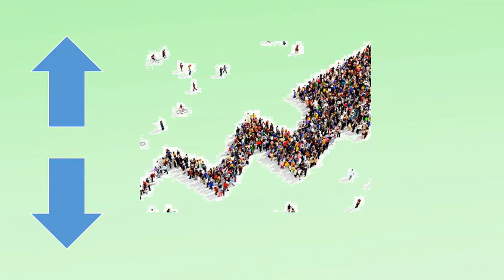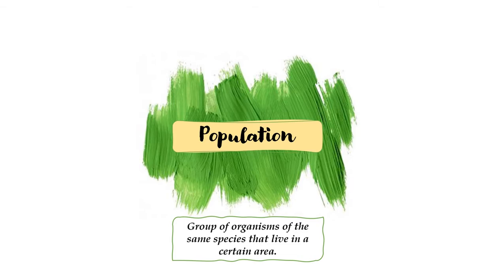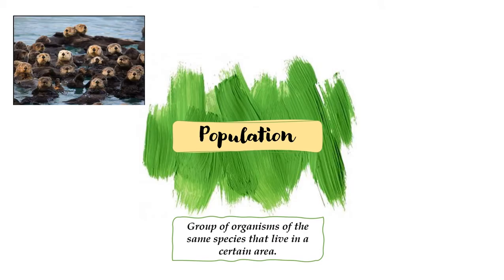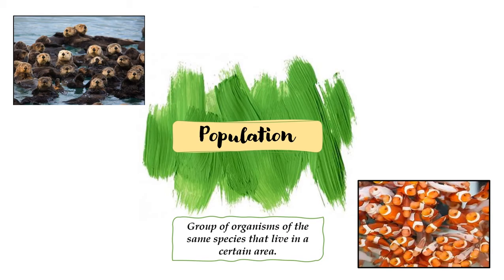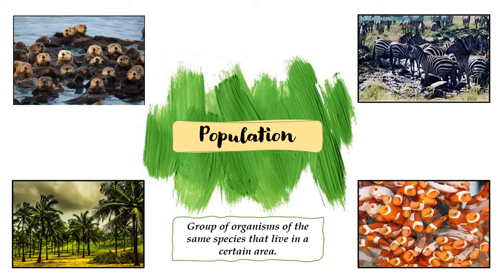Let us focus on the ups and downs of population growth. What is a population? It is a group of organisms of the same species that live in a certain area. Examples include sea otter, clownfish, zebra, and coconut plantation — they are the same species in a particular area.